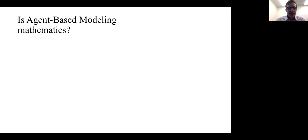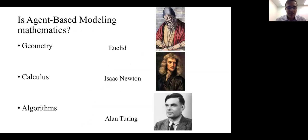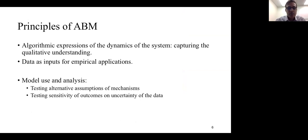A question I often get from applied math students is: is agent-based modeling actually mathematics? I remind people about history — Isaac Newton wrote his work using geometry, but now we are moving to an algorithmic phase where we describe a lot of systems using algorithms. Alan Turing was a mathematician. It's a different type of math, but many systems can be described in formal algorithmic statements.